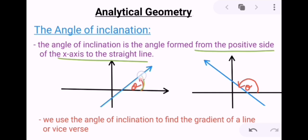You can see this red angle over here, that is angle theta, and it's formed from the positive side—so the right-hand side of the x-axis is considered the positive side—and it's from that line to the straight line. That is the angle of inclination. We can look at it on the other side as well.